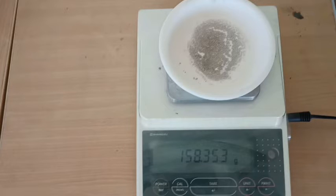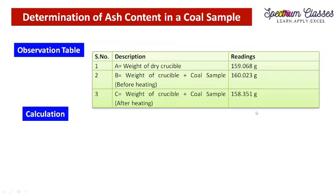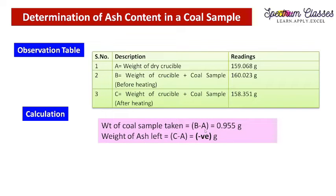We are going to measure the percentage ash content. Here are the readings I got from the experiment. The weight of the coal sample is determined as B minus A, where B is the weight of the crucible plus coal sample and A is the weight of the crucible alone. Now we need to determine the weight of the ash content left.